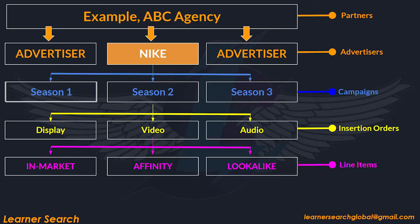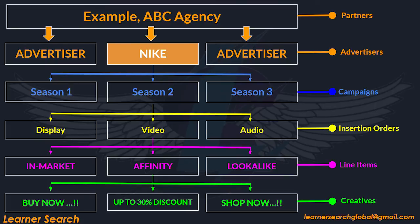The video campaign is targeted with different audience segments like in-market, affinity, and look-alike. Different line items are created for each audience segment to monitor performance. Each line item is assigned with different creatives having three different ad messages — 'buy now', 'up to 30% discount', and 'shop now'. Three creatives are in rotation for each line item. At the creative level, advertisers have an option to optimize as per the performance of each creative which is in rotation.